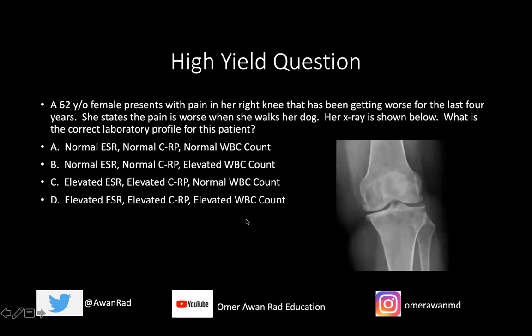This is the high yield question, which I promise we'll come back to at the very end of this talk. So this is a 62-year-old female presenting with pain in her right knee that has been getting worse for the last four years. She states that the pain is worse when she walks her dog. Her x-ray is shown below. And what's the correct laboratory profile for this patient? Is the ESR, CRP, and white blood cell count normal?